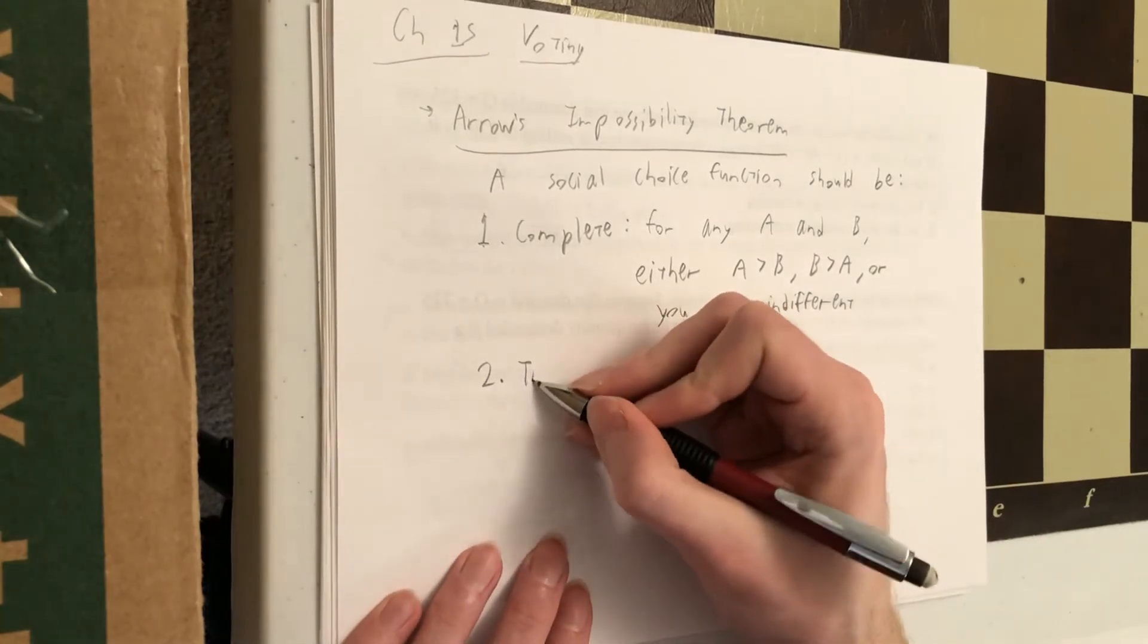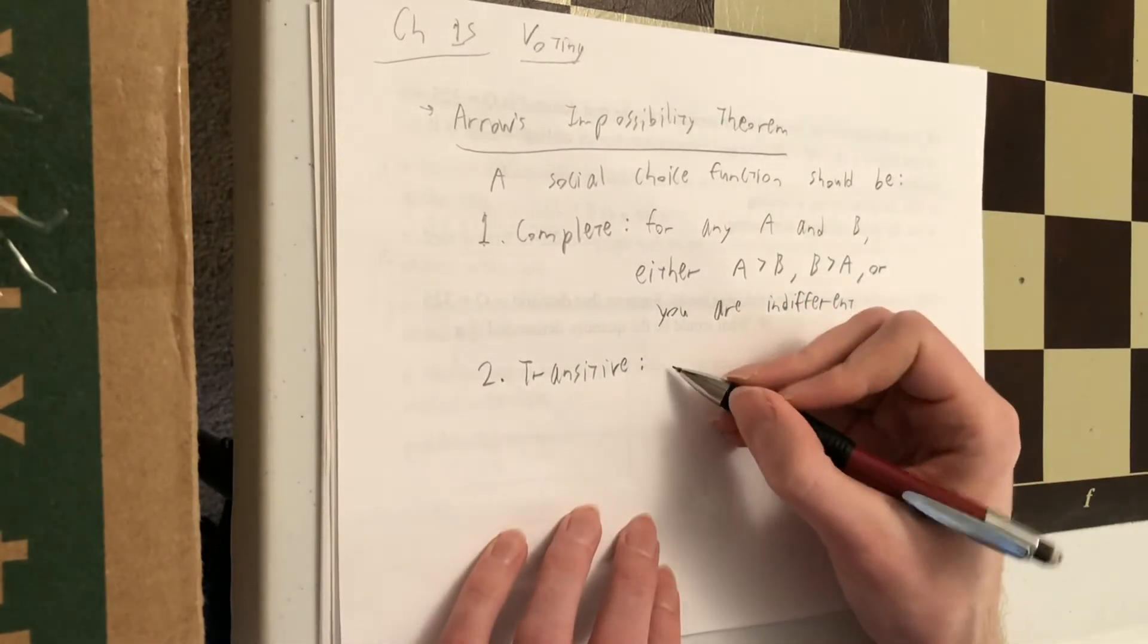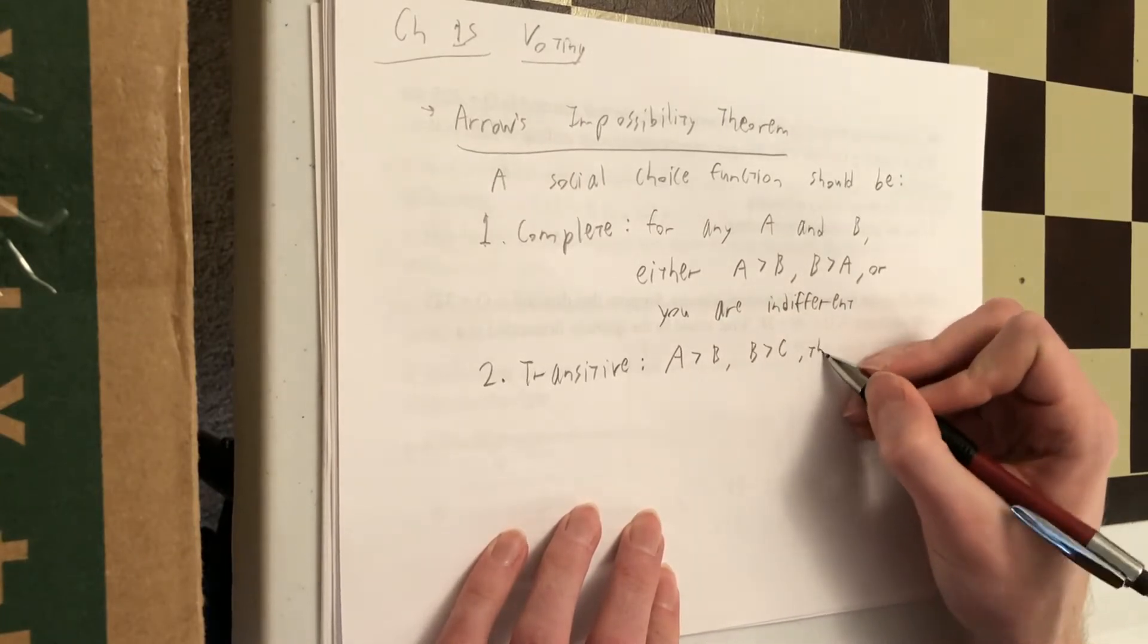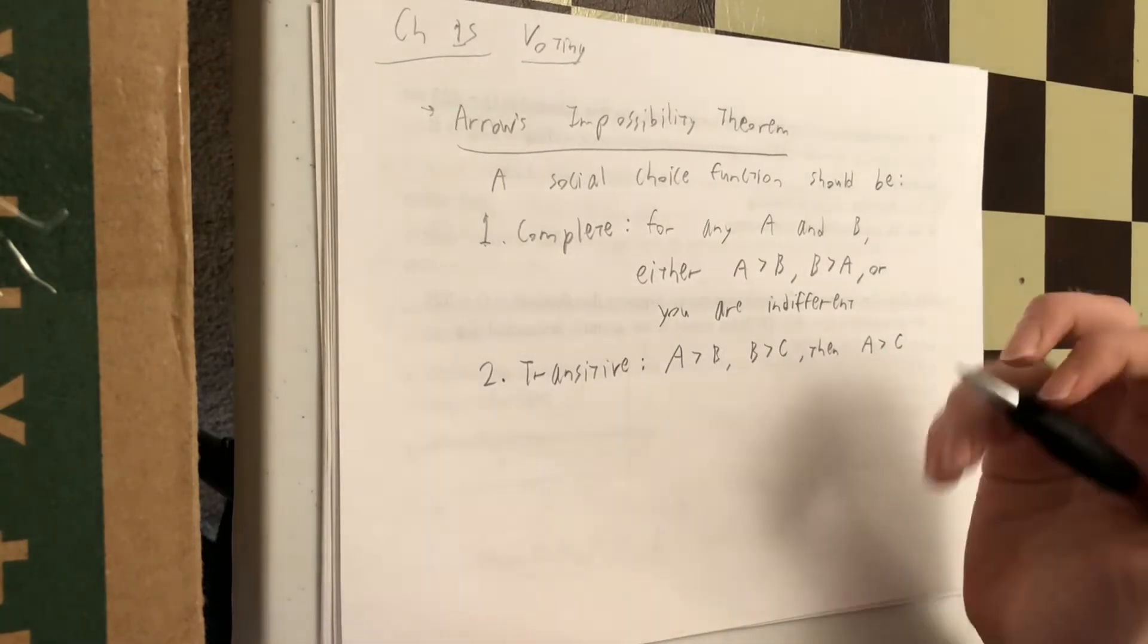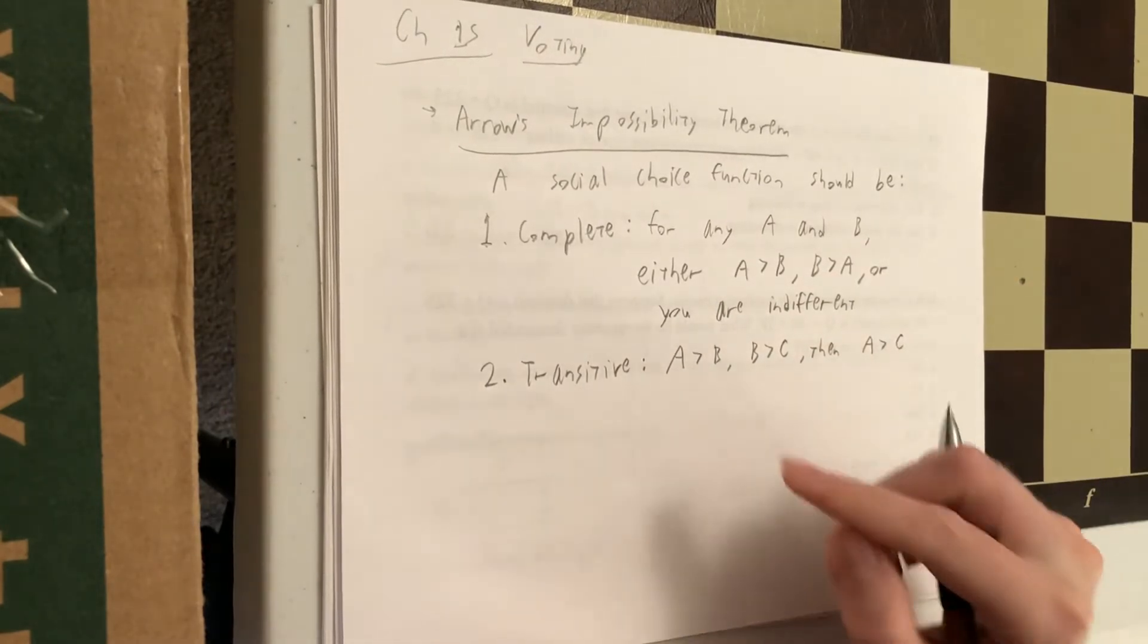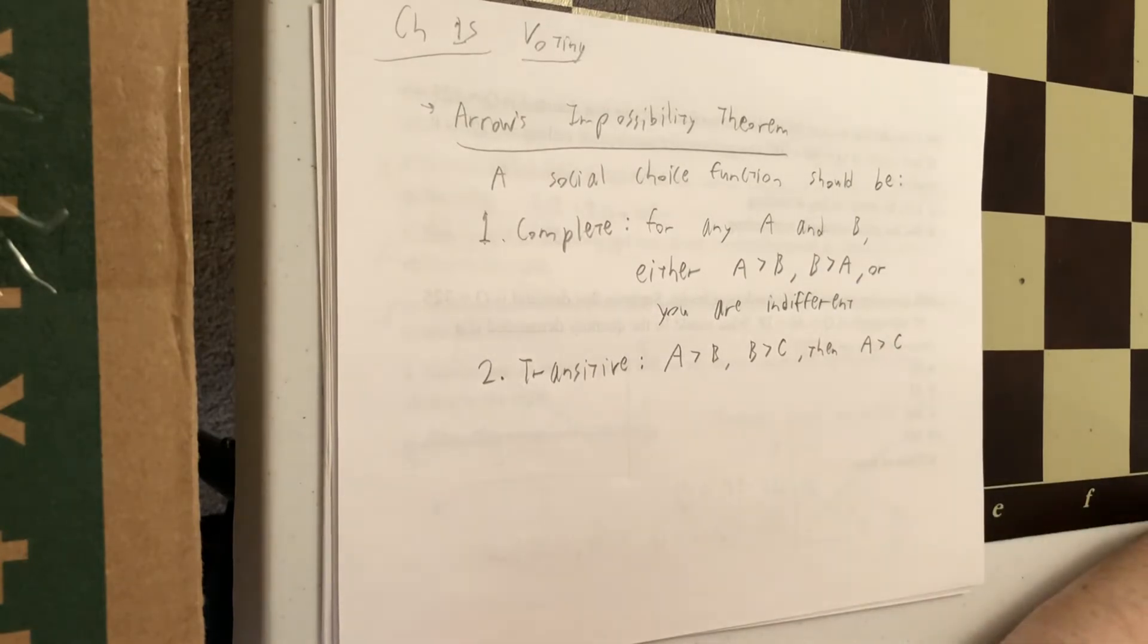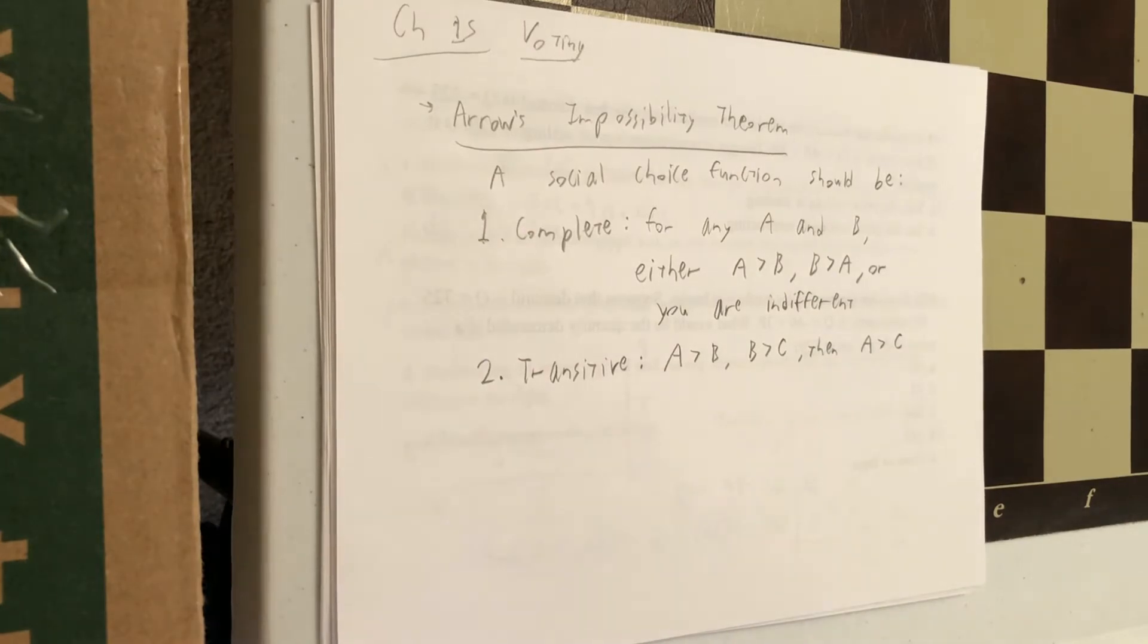Requirement number two, it should be transitive. By that we mean if A is better than B, and B is better than C, then A should also be better than C. That just makes sense. If Biden is better than Trump, and Trump is better than some third-party candidate, then Biden's also better than that third-party candidate. It wouldn't make sense if we're the other way around, where C is better than A, and then you can't really reach a decision.